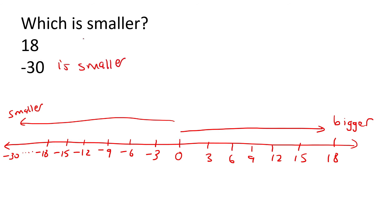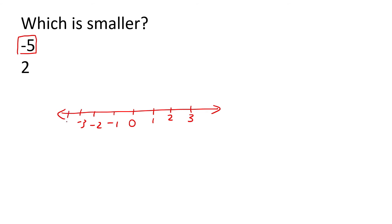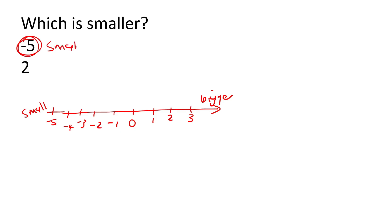I see a lot of learners do this — they just look at the 18 and they look at the 30, and they say that 18 is smaller than 30. But this is not 30 — this is minus 30. What about minus 5 and 2? Well, a lot of learners will say that the number 2 is smaller, but remember, it's not 5 — it's minus 5. So if 0 is over here, 1, 2, 3, and then minus 1, minus 2, minus 3, minus 4, minus 5 — can you see that minus 5 is on the left of 2? So this one's more on the right, this one's more on the left, and the one on the left is always smaller, and the one on the right is always bigger. So minus 5 is smaller.